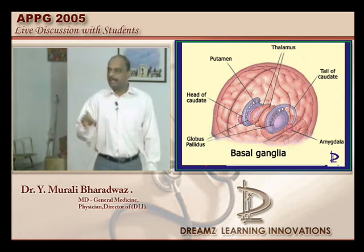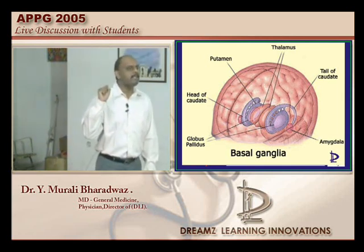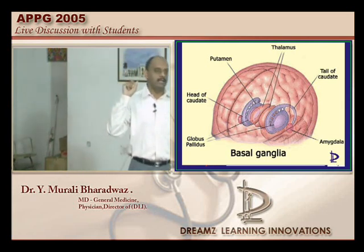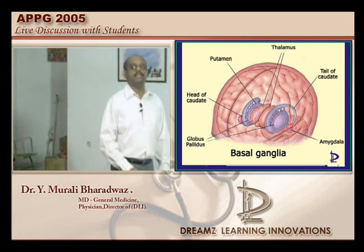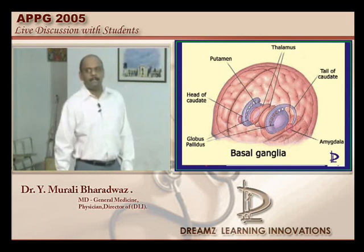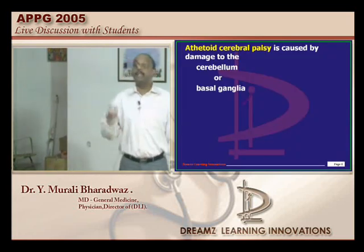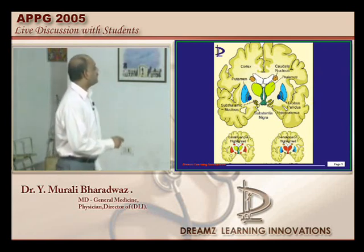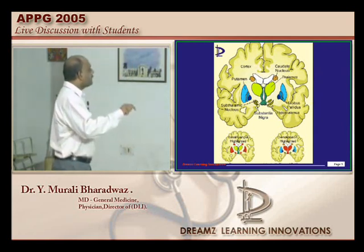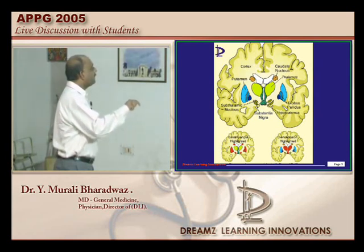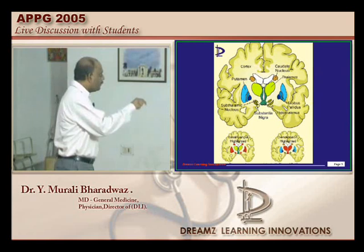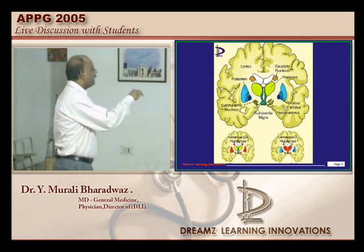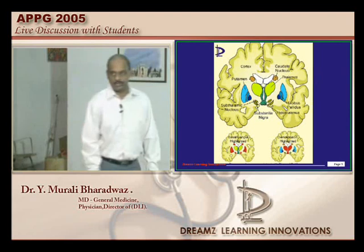Thalamus coordinates with the basal ganglia — it receives signals from the cerebellum and also from the basal ganglia. Basal ganglia continuously causes inhibition on the thalamus, whereas the cerebellum causes stimulation towards the thalamus. In the cut section of the brain, you can appreciate the ventricle, the thalamus, and the caudate nucleus. Between these two you have the internal capsule passing over, and here you have the globus pallidus — all associated with fine motor control.